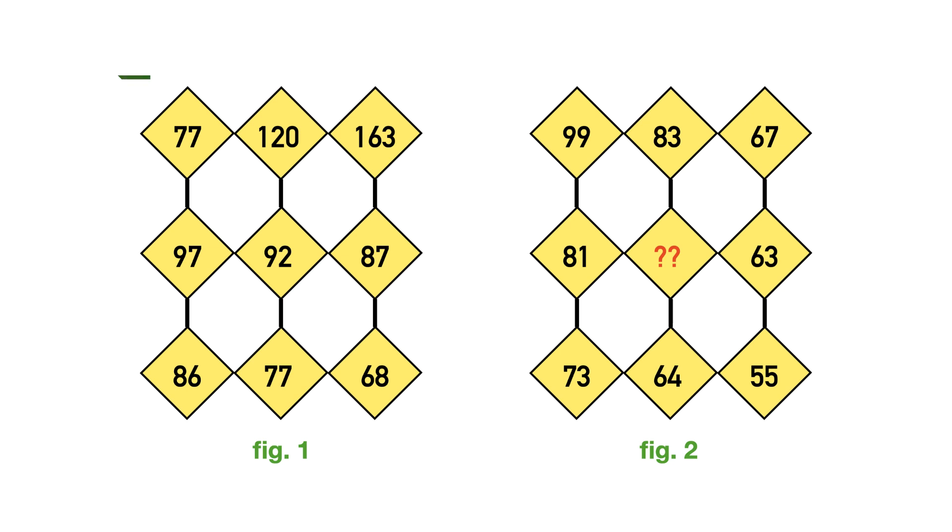So in figure 1, in the first horizontal row of numbers, add first and last number and divide the result by 2. The resulting number is the second number.